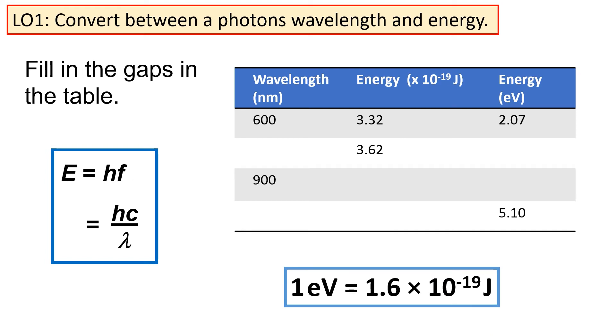And here's a chance for you to practice using this equation. Pause the video and use the equation to fill in the gaps in the table. It's worth noting that the wavelength is given to you in nanometers and the energy in the first column is to the power 10 to the minus 19 joules. And here are the values of the completed table.